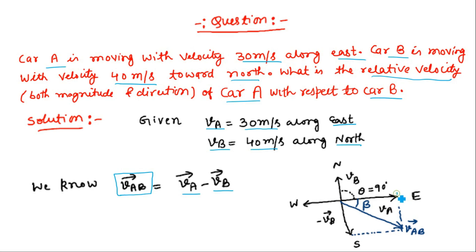This is the velocity of car A (VA vector) and this is the velocity of car B (VB vector). VA is toward east and VB is toward north, so the angle between these velocities is 90 degrees. Since we have to find the velocity of car A with respect to car B, we have to reverse the velocity VB. So this is the reversed velocity, minus VB vector.